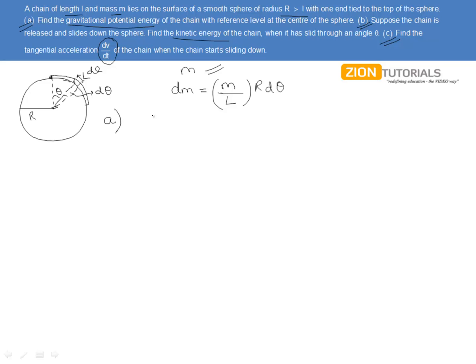So, for the first part we need to find out the gravitational potential energy. Now, let us first find the potential energy for the element which will be the mass that is dM g into height. What is height? Height is this one which is R cos theta. We got it from here. This is R, this is theta, so this is R cos theta.